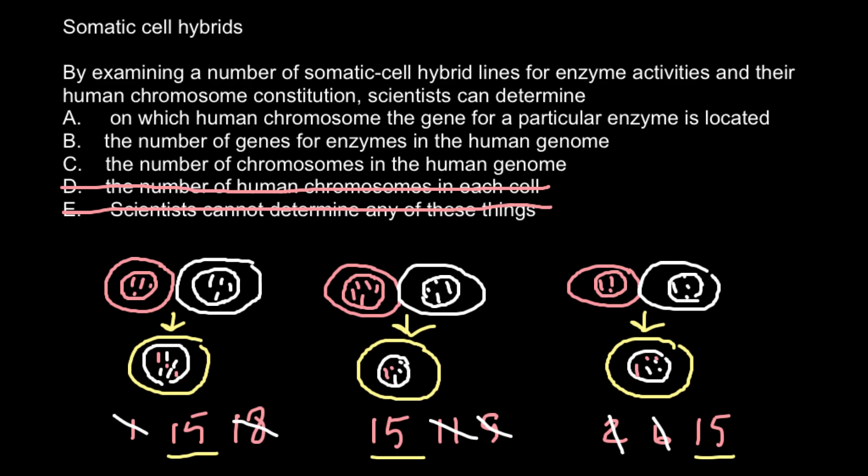And this is not what we are looking for with this technique because we know that human genome consists of 46 chromosomes or 23 pairs of chromosomes for about 70 years. And as you see, we're left with only two answers. Answer B: the number of genes for enzymes in the human genome - and with this technique we also cannot find the number of genes.